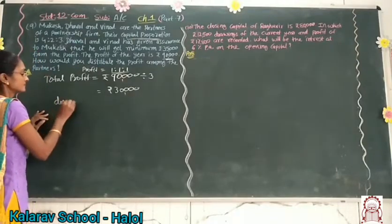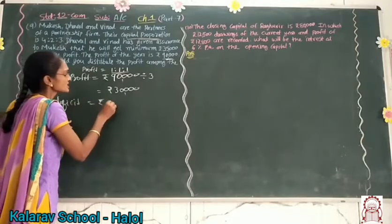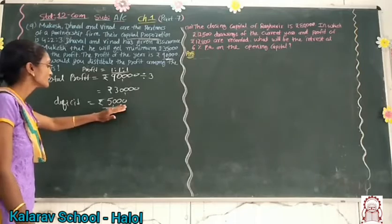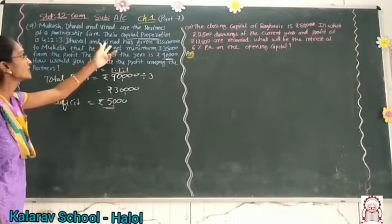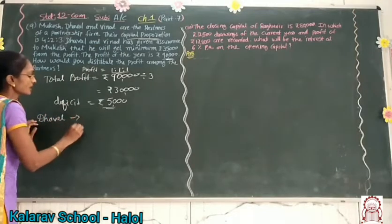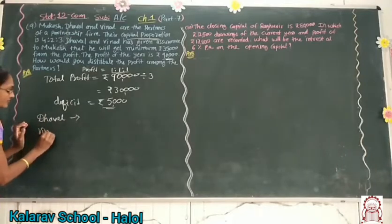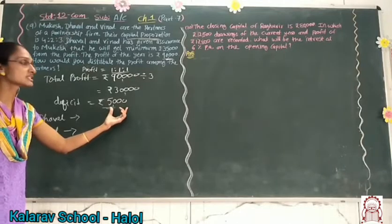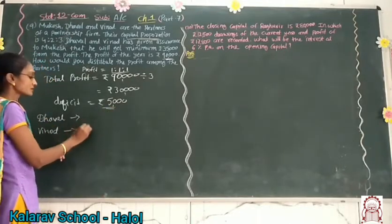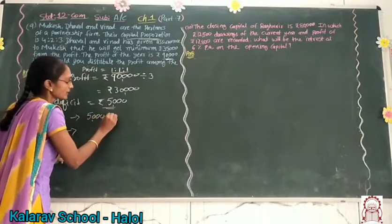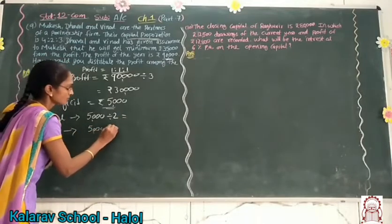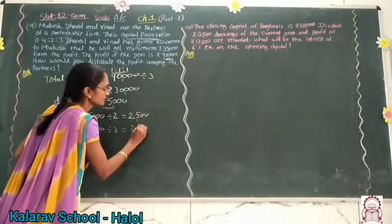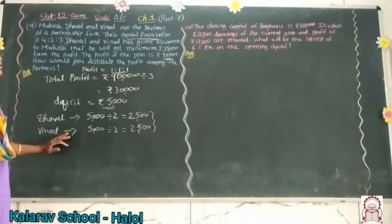So what is the deficit? The deficit amount is Rs. 5,000. When we add Rs. 5,000, Mukesh will get Rs. 35,000. Dhaval and Vinod have given the assurance to provide this amount. So we have to divide this Rs. 5,000 among these 2 partners — Rs. 5,000 divided by 2. So each partner will sacrifice Rs. 2,500 from their profit.